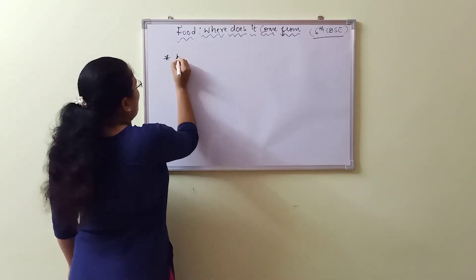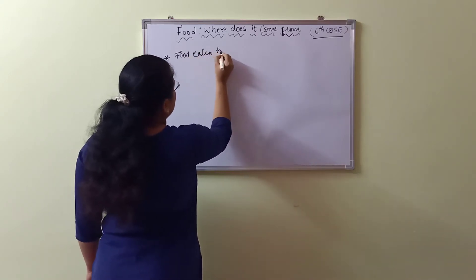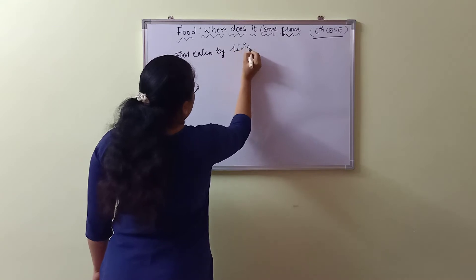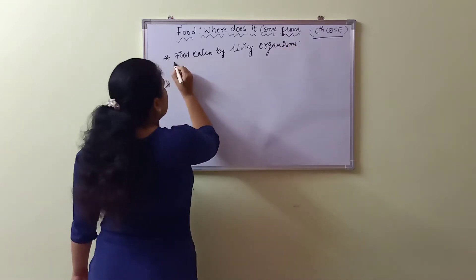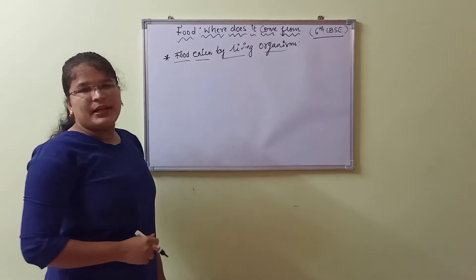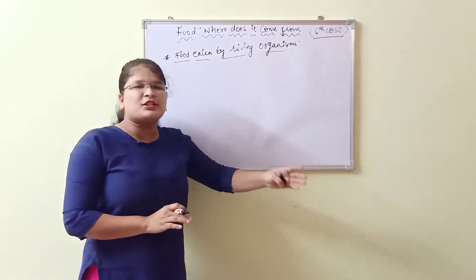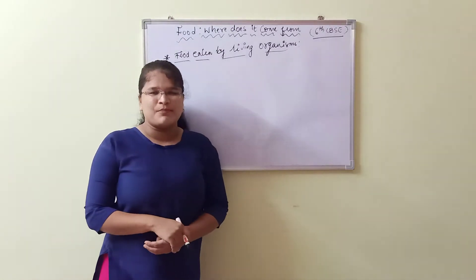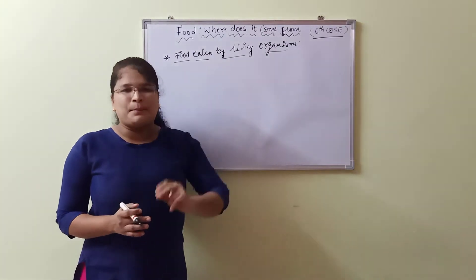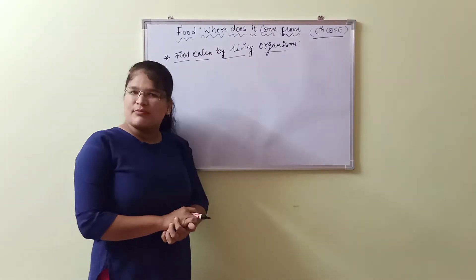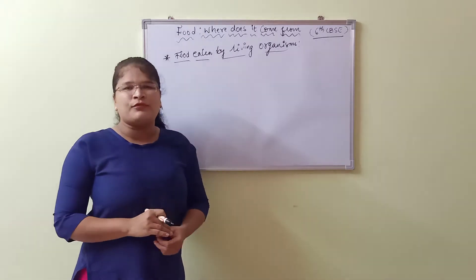Today we are going to know about food eaten by living organisms. There are different variations in food habits from person to person and from one organism to another. For example, mosquitoes suck blood and feed upon blood only. The organisms present on this earth are categorized into three types on the basis of their food habits.